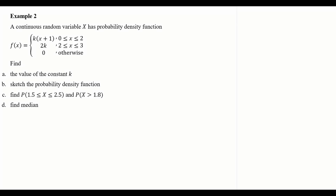Example 2: a continuous random variable X has the probability density function f(x) equals k times x plus 1 for x between 0 and 2, 2k for x between 2 and 3, and 0 otherwise. The questions are: (a) find the value of k, (b) sketch the probability density function, (c) find the probability of x between 1.5 and 2.5 and the probability of x greater than 1.8, and (d) find the median.